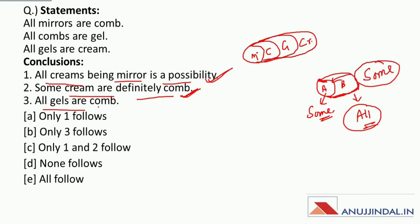Now next: all gels are comp. Ye wala jo gels hai, ye comp ho sakta hai nahin — if it were a possibility it might be true, but it is a definite statement which means it is incorrect. So therefore the answer is C — only one and two follow.